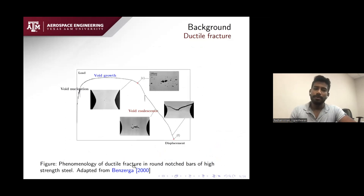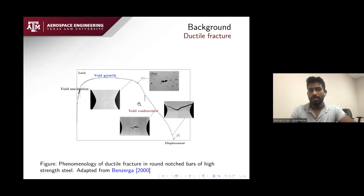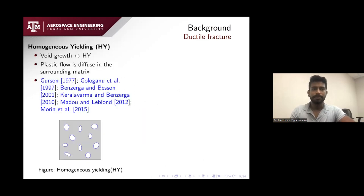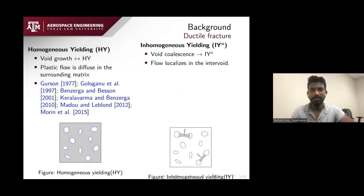What is ductile fracture? If you take a round bar and start pulling it, voids nucleate, grow, and coalesce with neighbors to form microcracks, which gradually evolve to form failure. Void growth is also called homogeneous yielding, where plastic flow is diffused in the matrix — all Gurson-type models fall into this category. The new concept here is inhomogeneous yielding, where plastic flow localizes in the intervoid ligament.